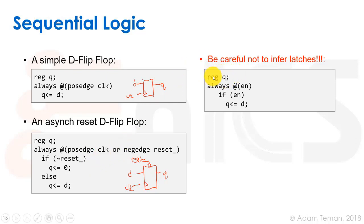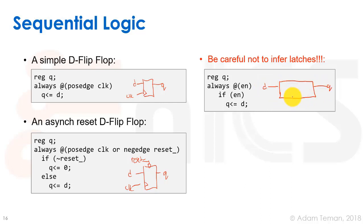To describe a latch, we use a reg Q but without posedge or negedge — it's 'always @(enable)', level-sensitive. Inside: 'if (enable) Q = D;' with no else. When enable is low, Q must retain its previous state, which infers a latch. This often happens by mistake when we don't account for every possible condition, causing unintended latching behavior.